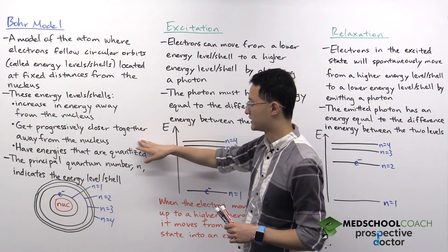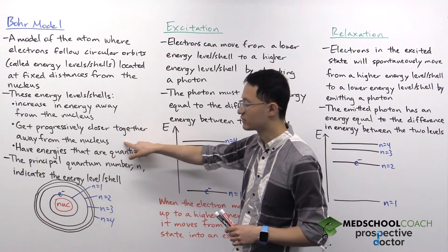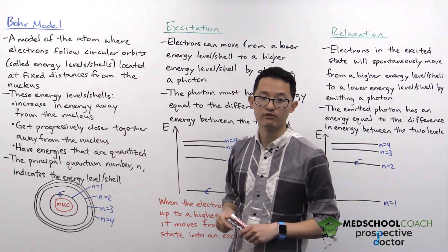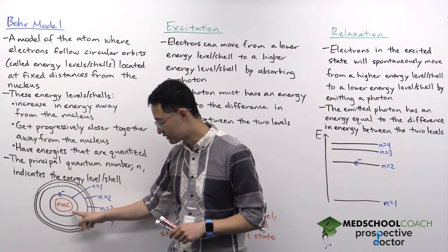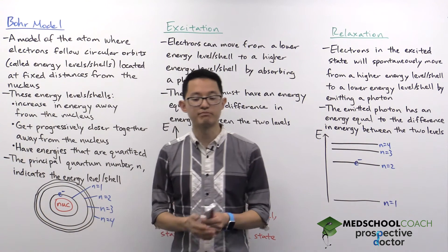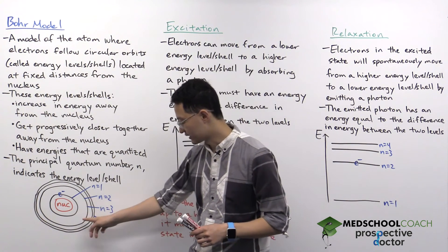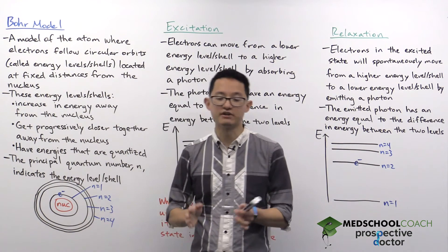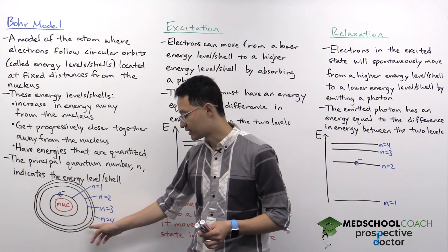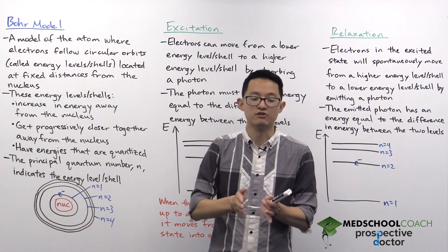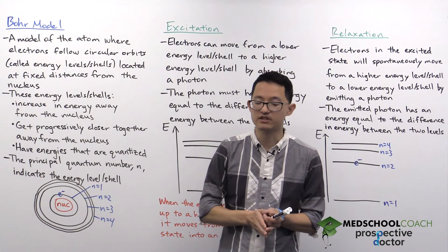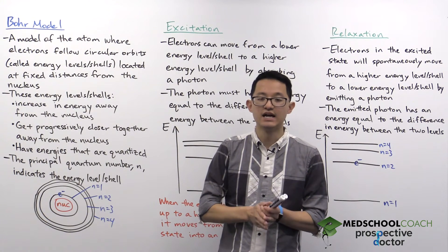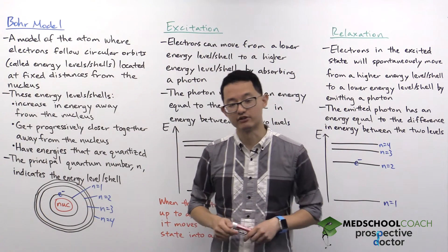A second important part of these shells is that they get progressively closer together as you move away from the nucleus. So the gap between the first shell and the second shell is a pretty large gap. But the gap between the second and the third shell is smaller, and the gap between the third and fourth shell is even smaller. So that also means that energy gaps, the difference in energies between consecutive shells, decreases as you move away from the nucleus.